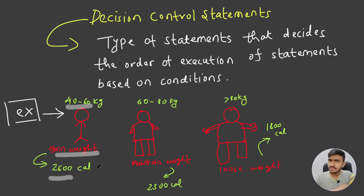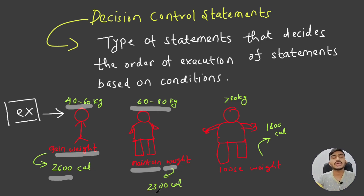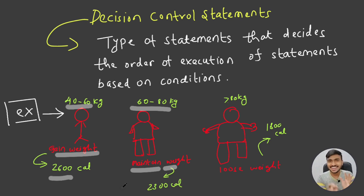There is the moderate weight category — or I will say the perfect weight category — that is 60 to 80 kg. If you are in this category, then ideally you should maintain your weight, and for maintaining your weight, you should eat 2300 calories per day. This is just an example — I know that calories and weight depend on your height and BMI — but don't look at it too scientifically.